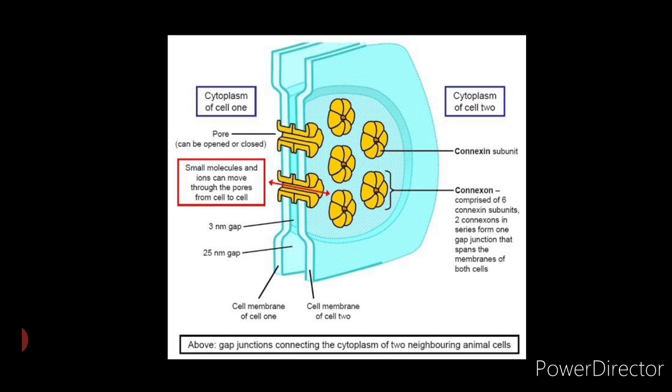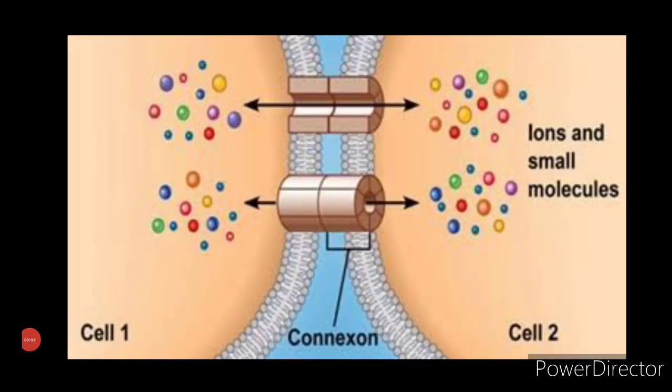Gap junction channels are dynamic structures that can open or close in response to a variety of factors, including calcium ions and hydrogen ions.